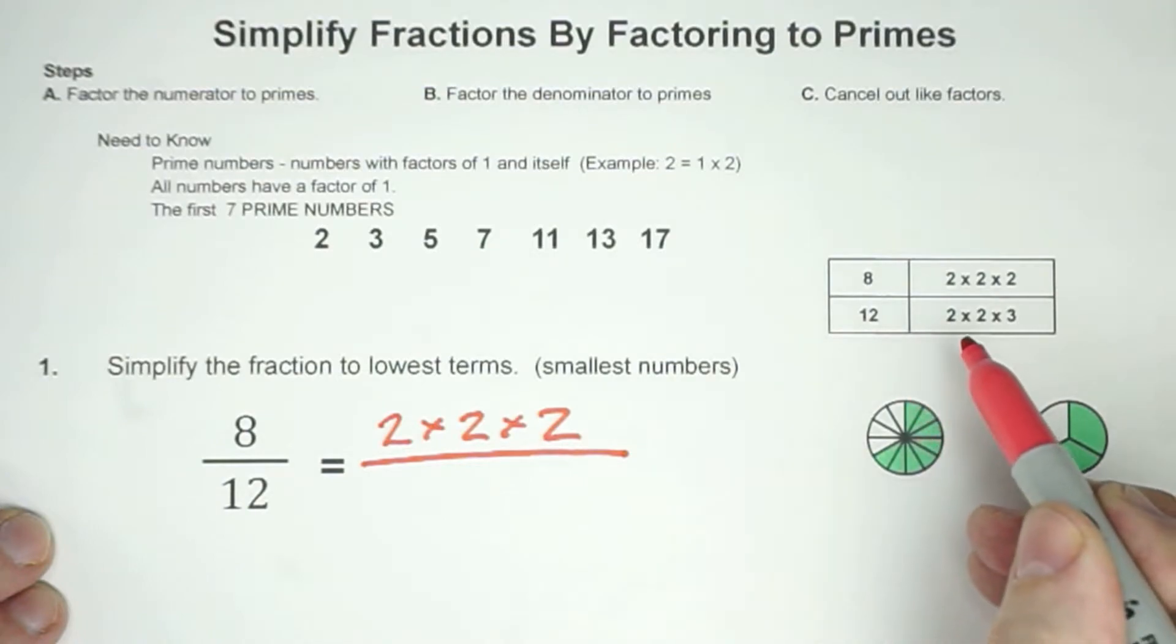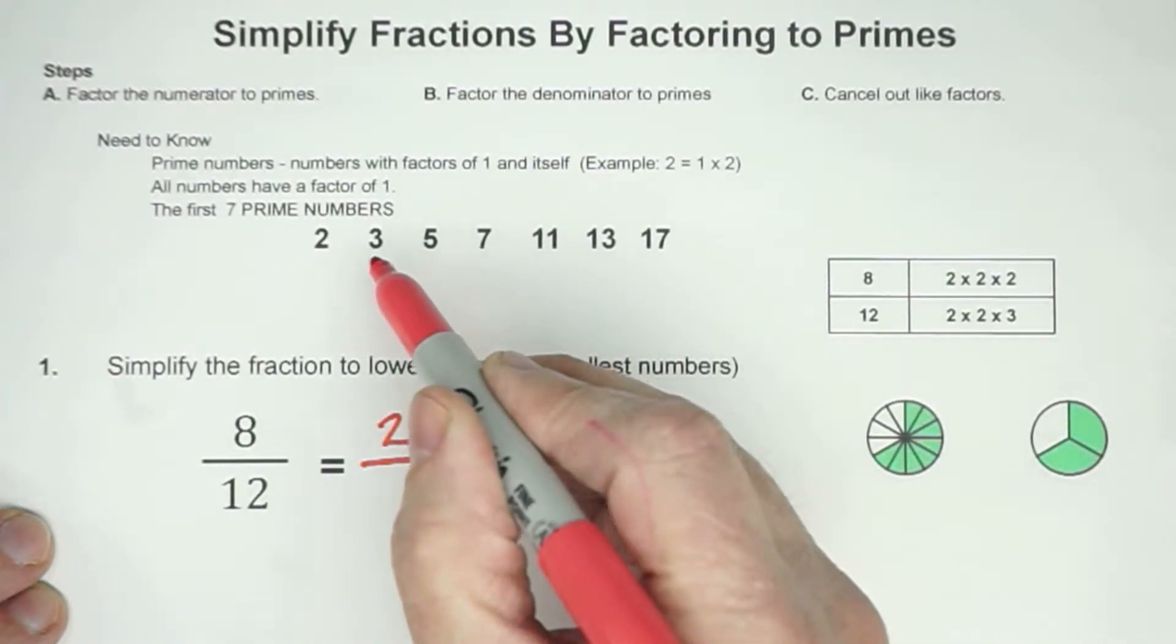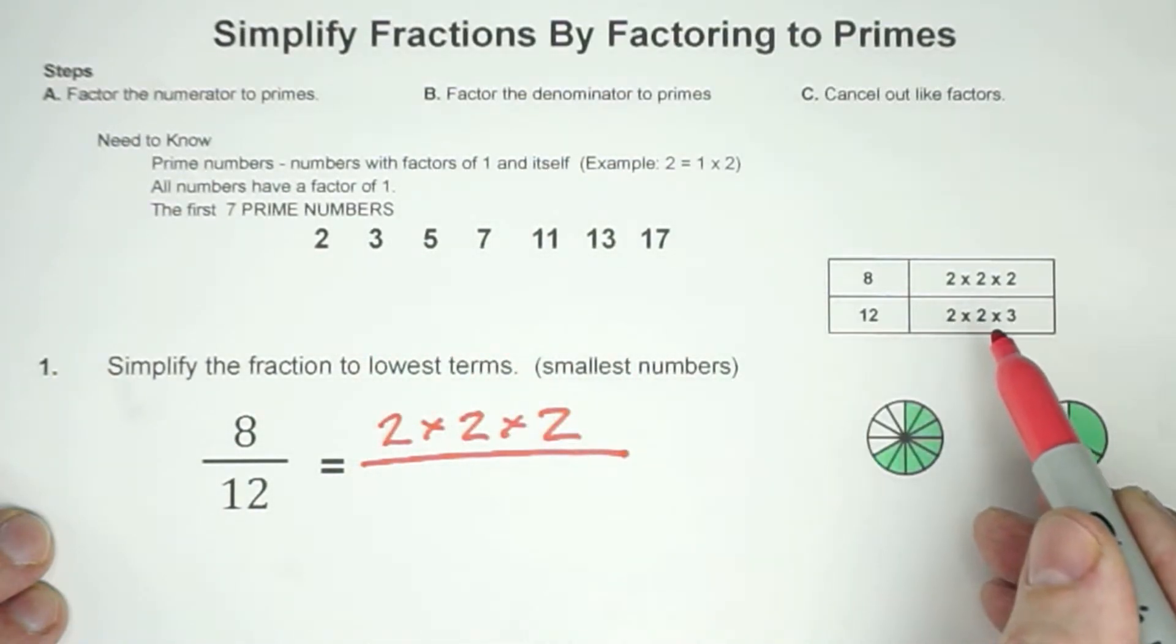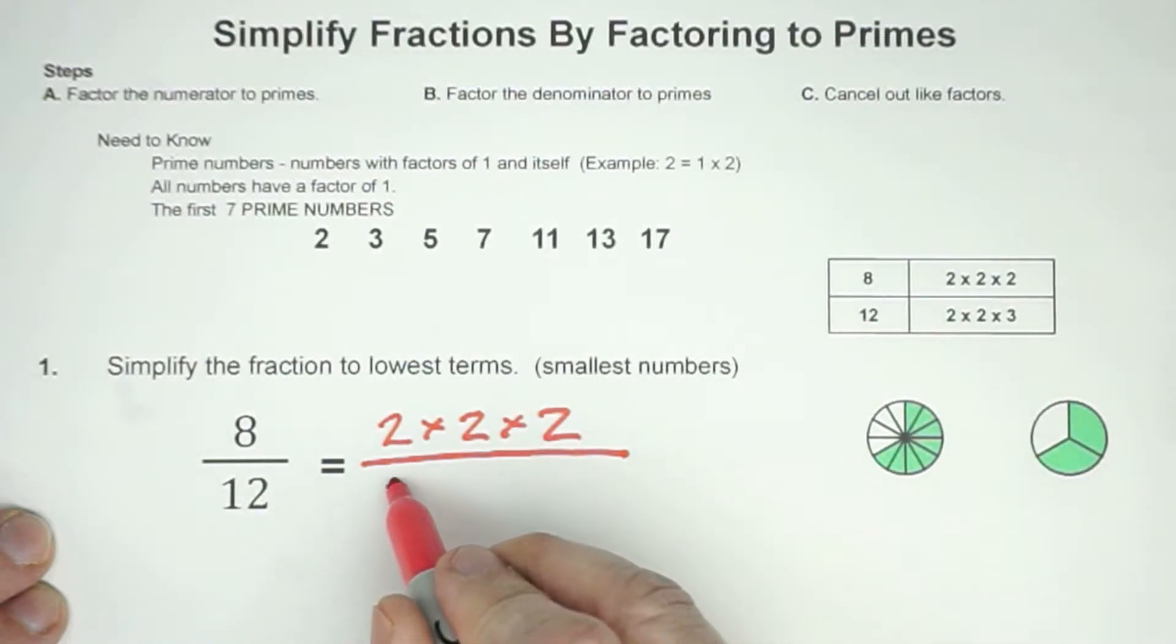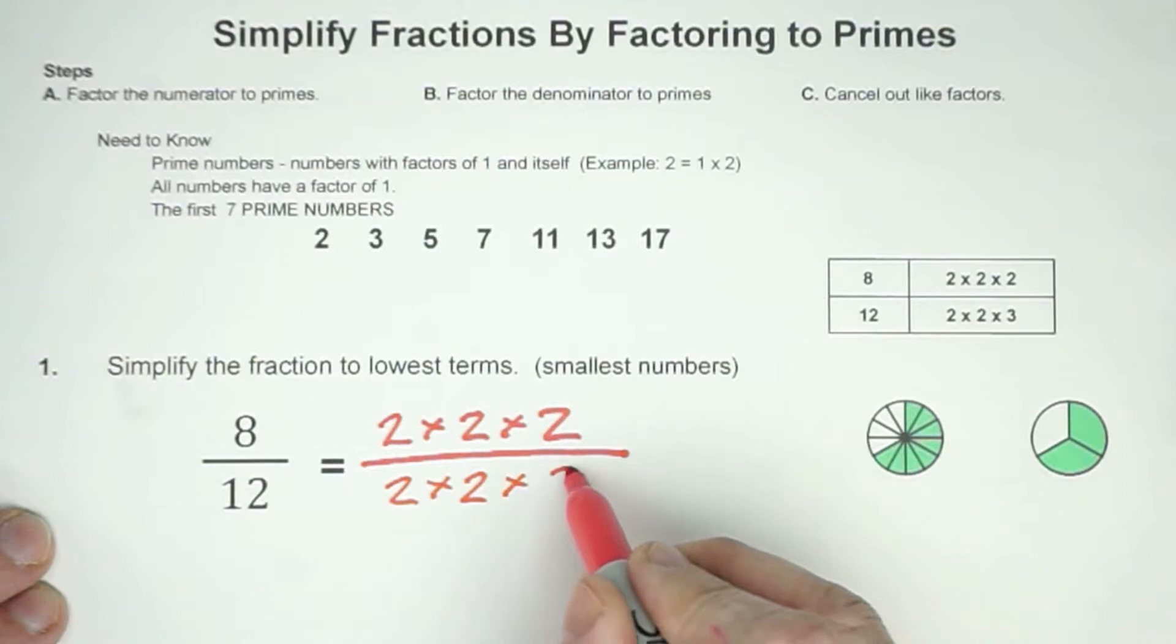The 12 factors out to 2 times 2 is 4, right? Times 3 is 12. Do you see how your 2's and your 3's are prime numbers? So this is factored out to prime numbers. So 2 times 2 times 3.